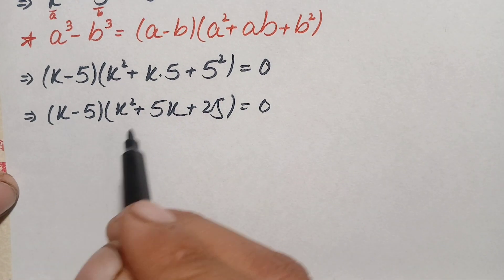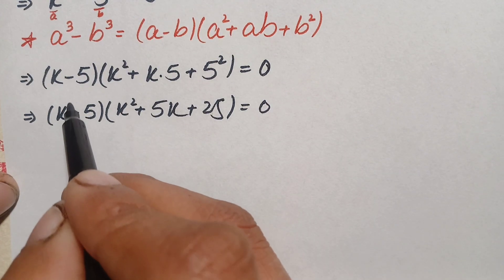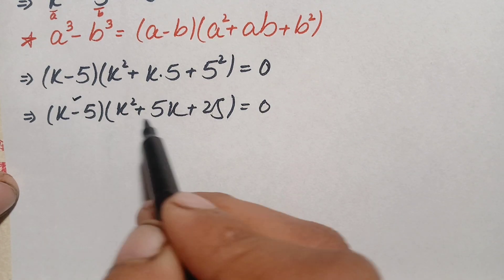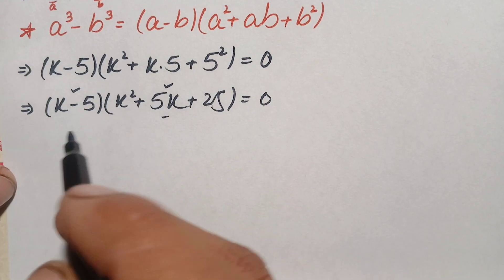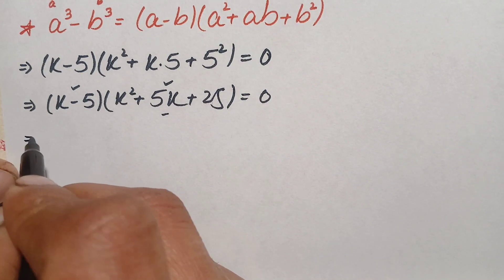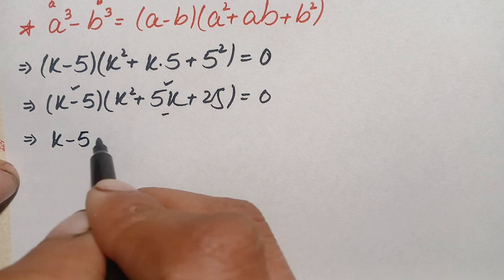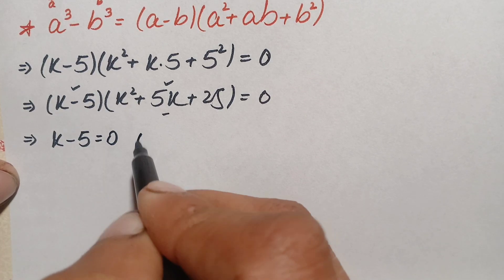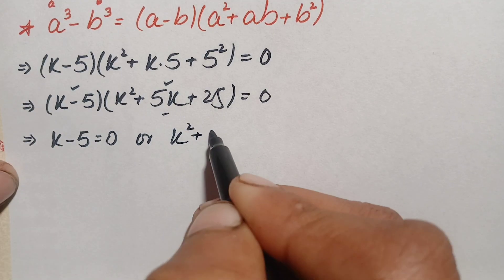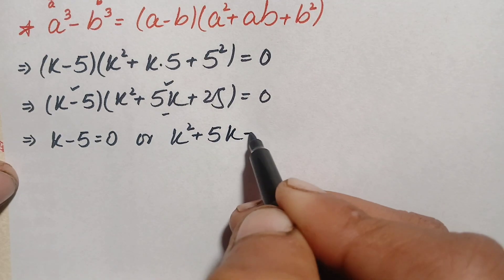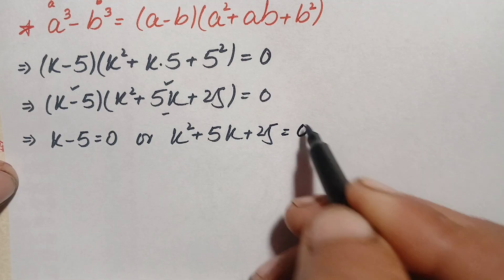Now the product of these two expressions is 0, so either this linear expression will be 0 or this quadratic expression will be 0. From here we get two equations: the first is k minus 5 = 0, or the quadratic equation k squared plus 5k plus 25 = 0.